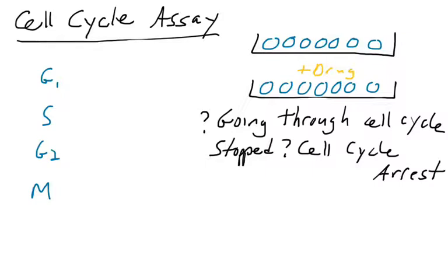The cell cycle phases are G1, S, and G2M. Are they arrested at a certain phase of the cell cycle? We'll talk later in the course about how cells can arrest in G1 or they can arrest in G2M.